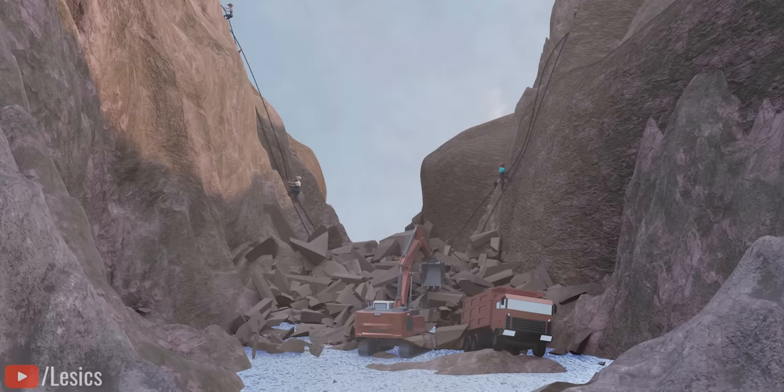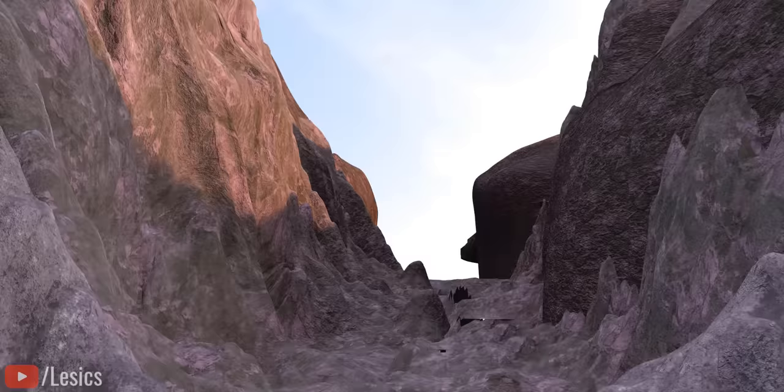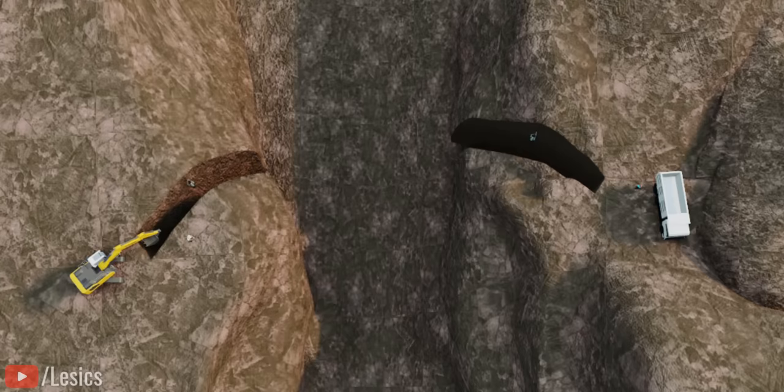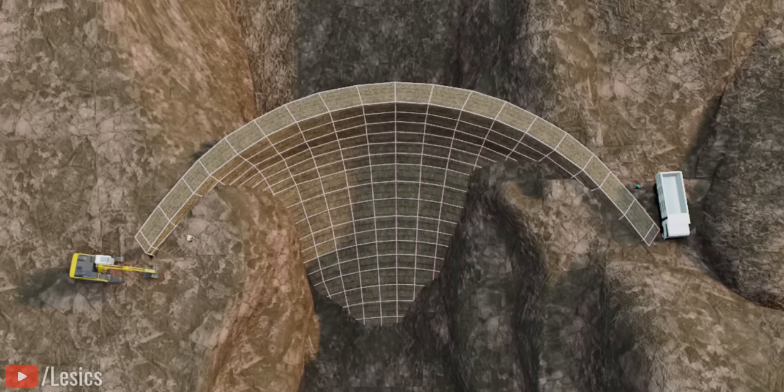This dam should have a strong joint with the sidewalls. For this purpose, they excavated the mountain wall in the shape of an arch, again using dynamite explosion. The dam body takes form from these deep holes, making the mountain wall-dam connection really strong.